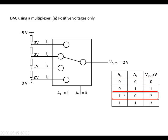0, 1 gives us 1 volt out. 1, 0 gives us 2 volts out. 1, 1 gives us 3 volts out. We'll look at making a larger multiplexer later.